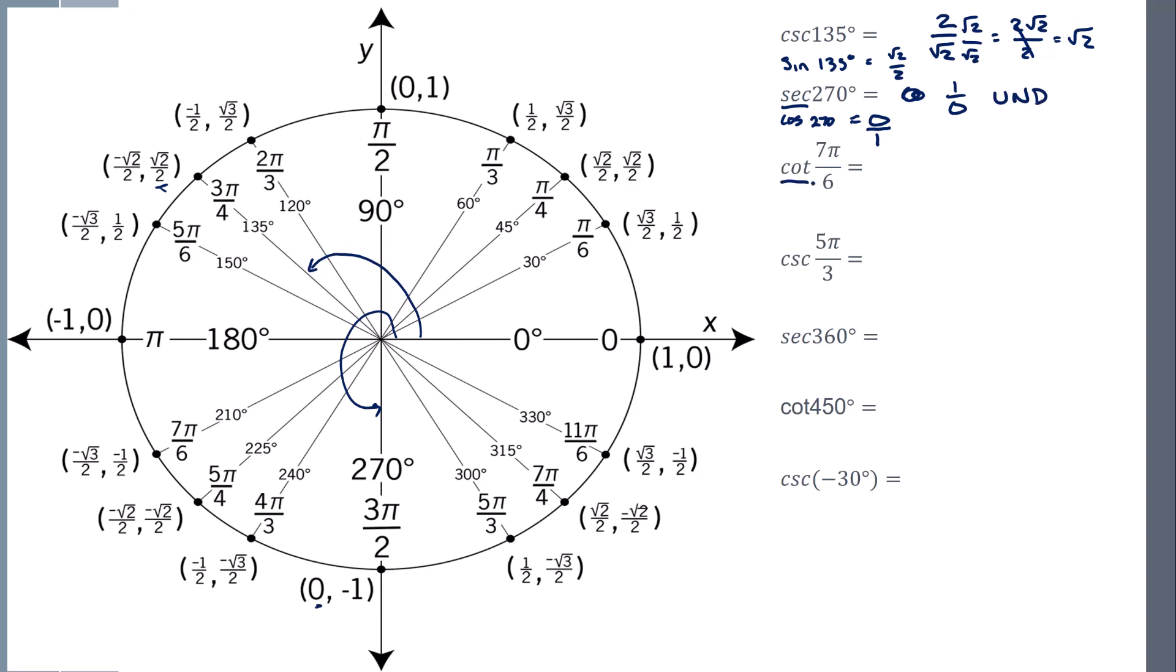So cotangent, that's the same as tangent. So go to 7 pi 6. What's the tangent of this? So I'm going to get y over x. Reduce. But now because it's cotangent, I'm going to flip it. So you get root 3 over 1.